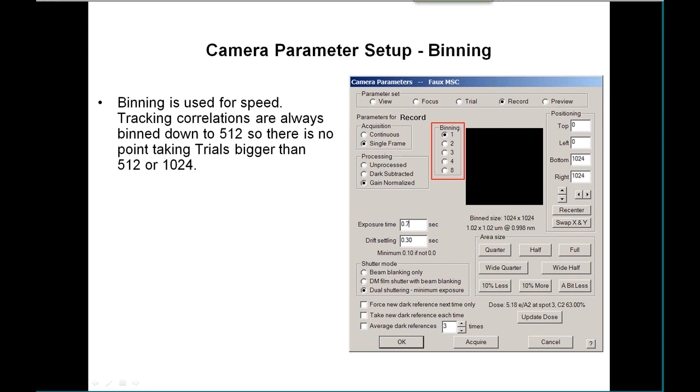Camera parameters setup - you'll go into this dialogue a lot. Binning is a very important thing with CCD cameras. We use it for speed, basically, because the CCD can bin before it has to read the data out, and this makes it all come out much faster.